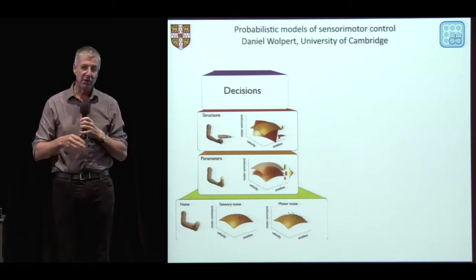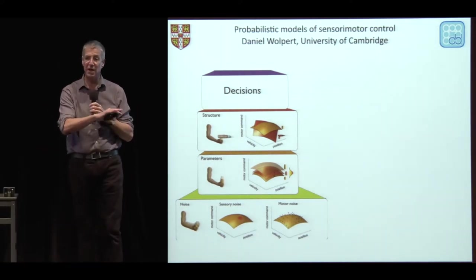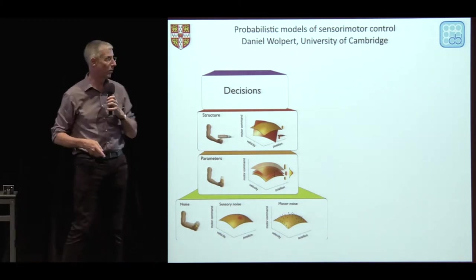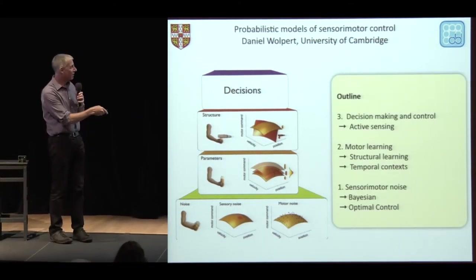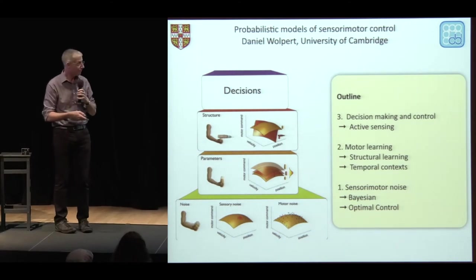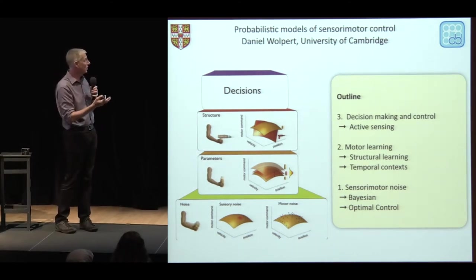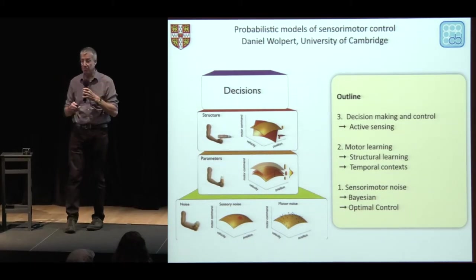Well, thanks very much, it's really great to be here. This meeting's been an amazing fusion of three different topics. Because I work on sensory motor control, which is in its infancy compared to some of you vision people, I'm going to give you a feel of the diversity of things we can study. I'll cover a sensory motor hierarchy, starting at the bottom with sensory motor noise and Bayesian optimal control, then motor learning and structural learning and temporal context, and finishing with decision making and control in terms of active sensing.